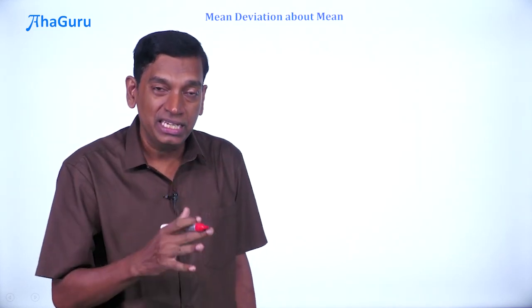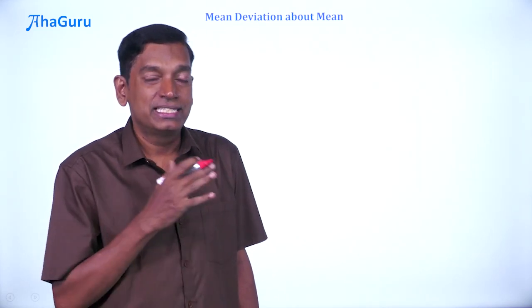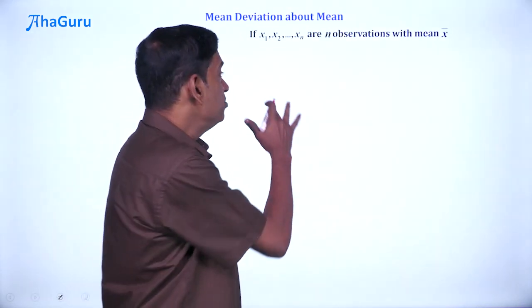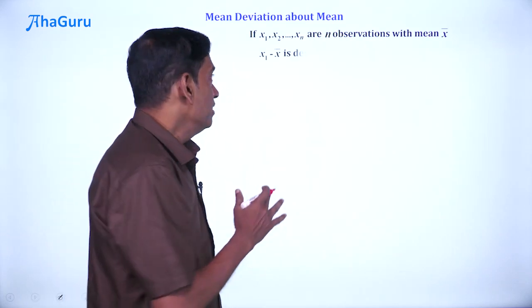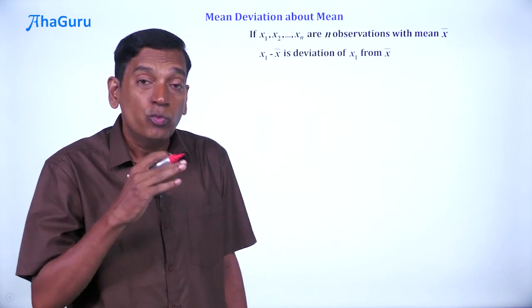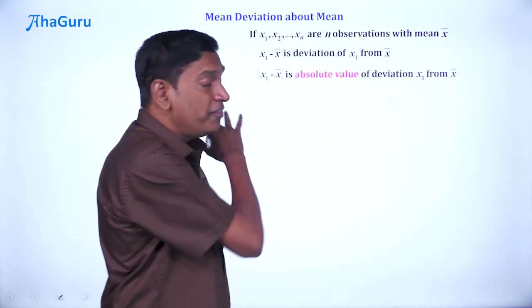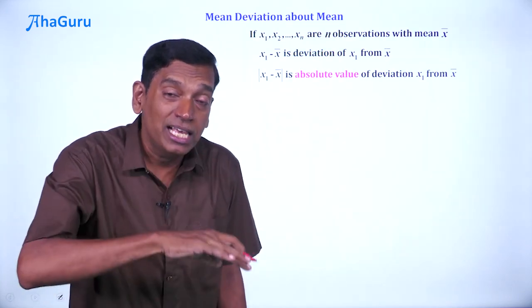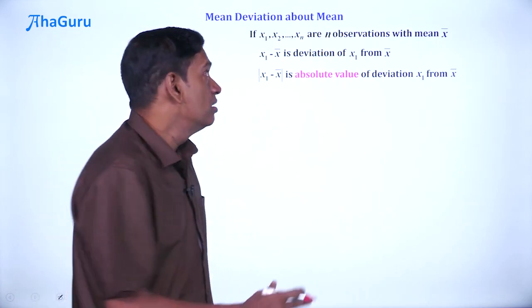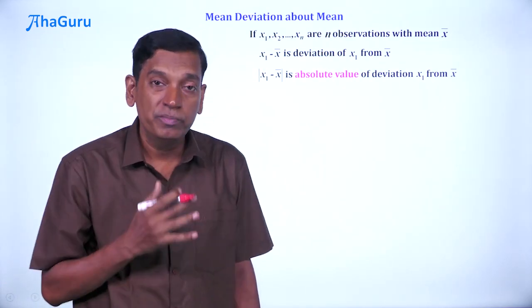So one idea that will help us convert this negative to positive is what is known as the mean deviation about the mean. As before, if x1, x2, xn are the n observations with mean x̄, then we know that x1 minus x̄ is the deviation of x1 from x̄. Now, what we are going to do is |x1 - x̄| is the absolute value of the deviation, and this is the quantity that we are going to use for mean deviation about mean.